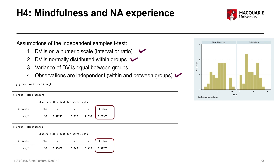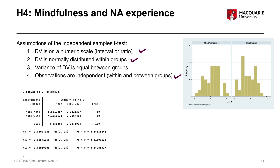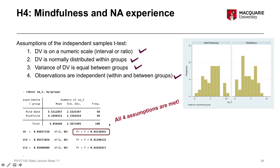The last assumption to check — equality of variances — we can test with Levene's test, just like the previous example. The results from Levene's test are testing the distribution of negative affect 2 scores between the two groups to see if the spread of scores is approximately the same. The standard deviations are very similar between the mind-wandering and mindfulness groups. The p-value from Levene's test is non-significant at 0.8, which is much bigger than 0.05, so the assumption of equality of variances is met. All four assumptions are met and we can proceed to the final independent samples t-test.